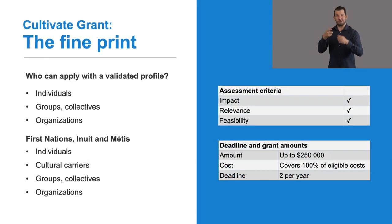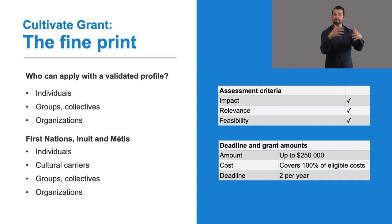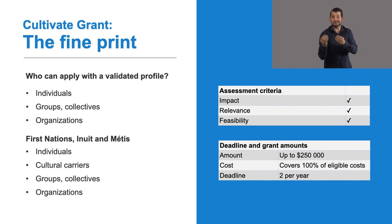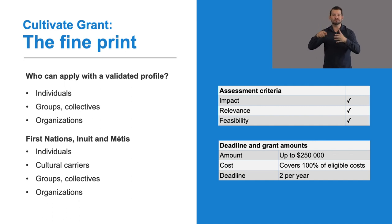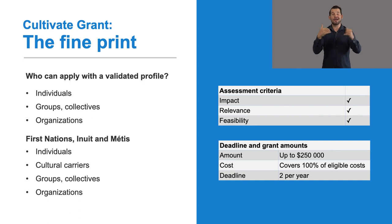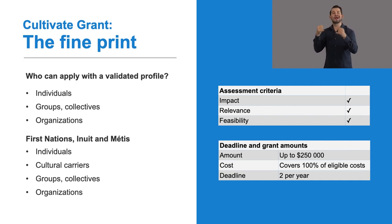To apply, you must be an individual, a group, a collective, or an organization with a validated profile on the Canada Council portal. You can also be an individual, a cultural facilitator, a First Nations, Inuit or Métis group, collective, or organization with a validated profile on the Canada Council portal. There are two deadlines per year. Please see the Deadlines and Notification of Results page for the current year's deadlines.